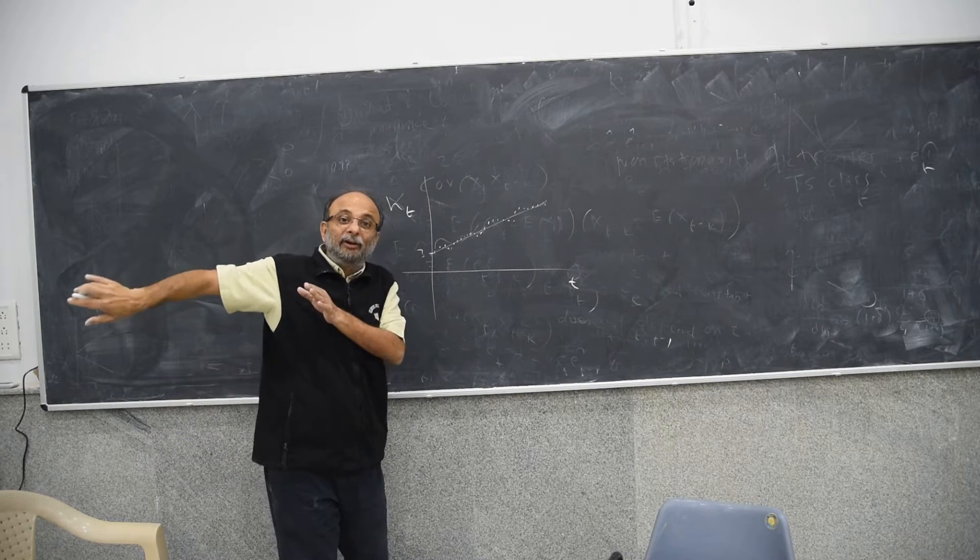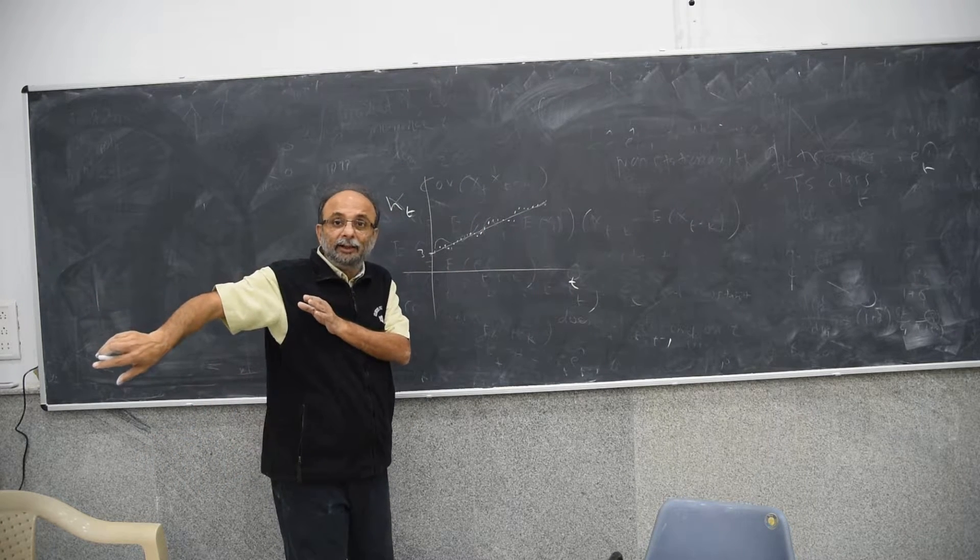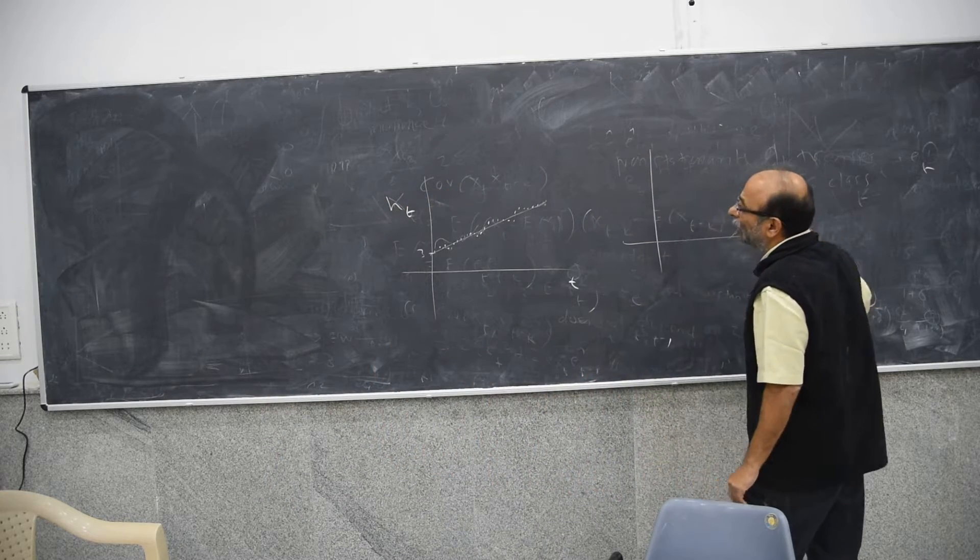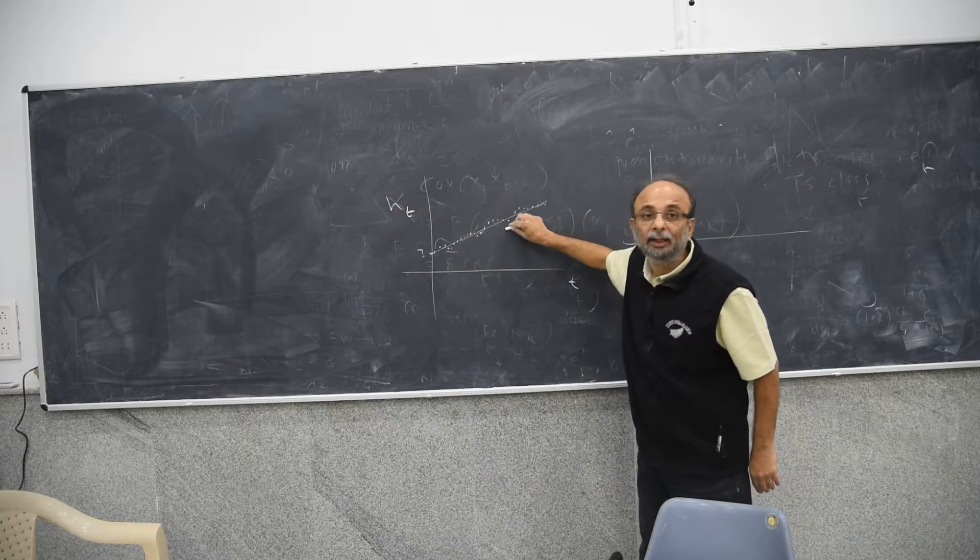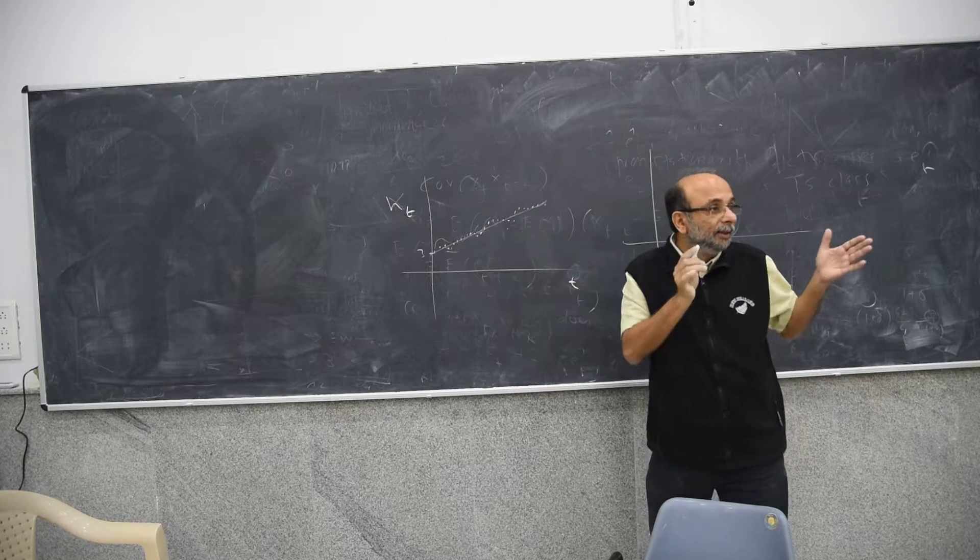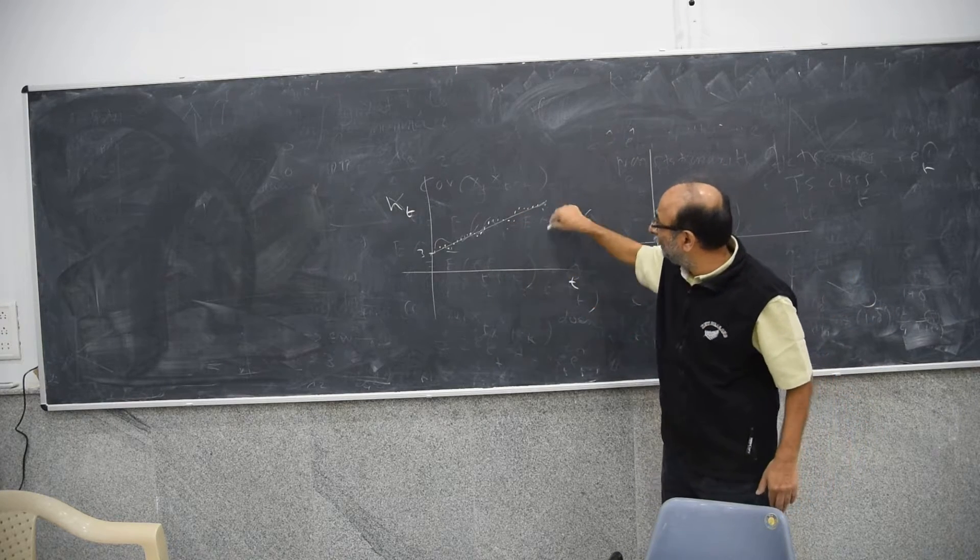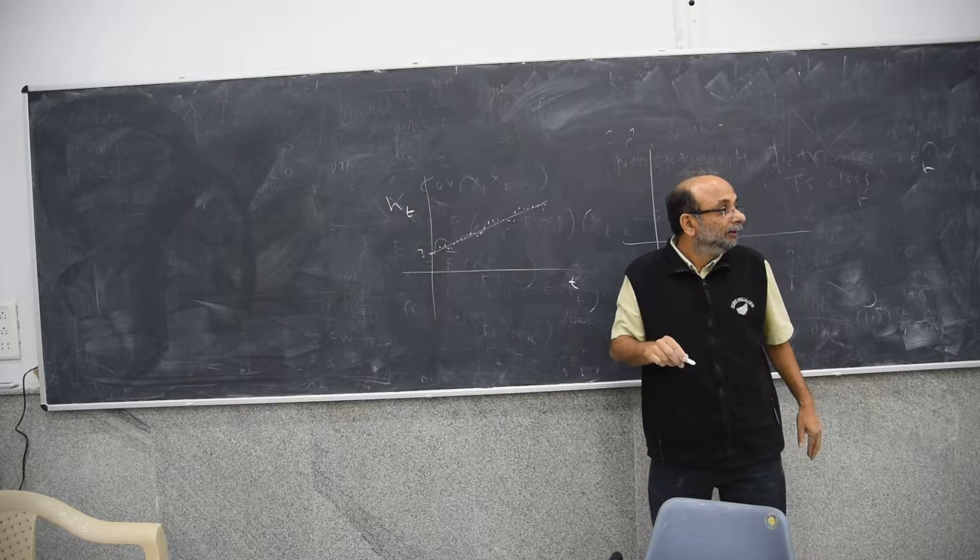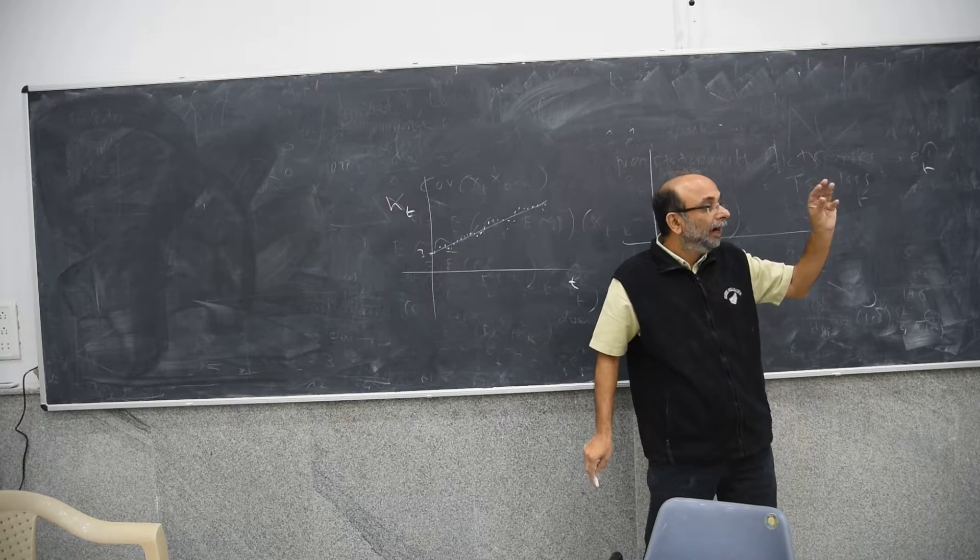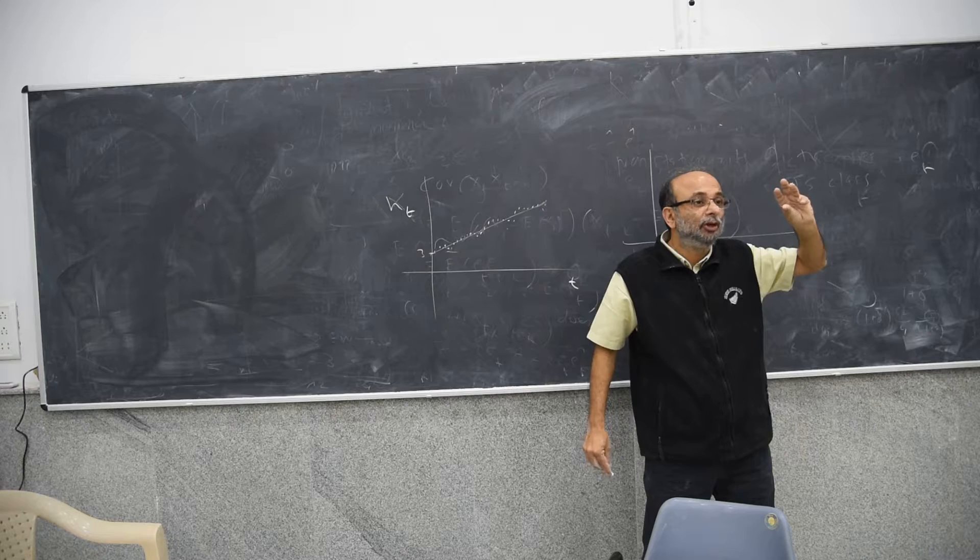So if you take the trend out, if you take the trend out and look only at ET, whatever remains, only ET will remain, if you take this straight line out, then what do you get? What is left with ET, and the mean of ET is 0, the variance is constant.